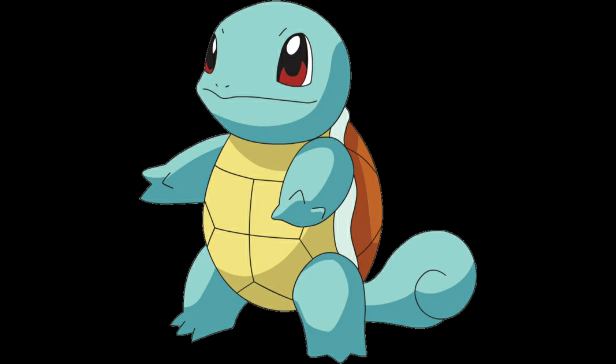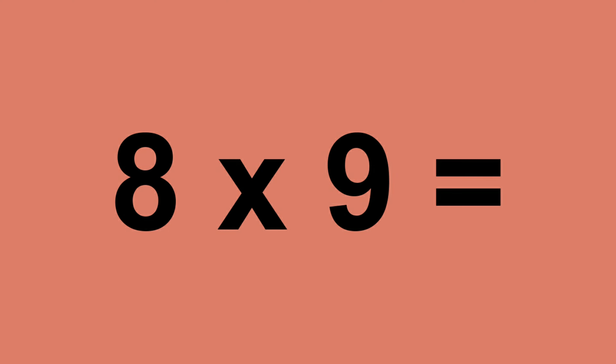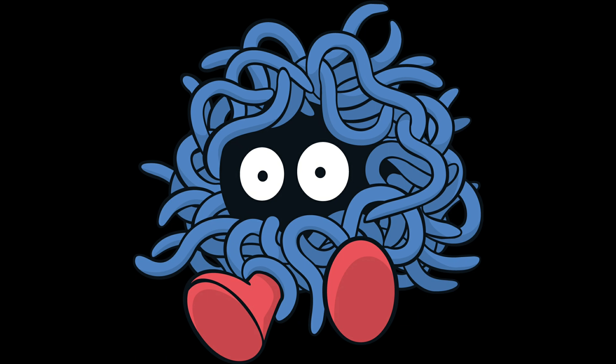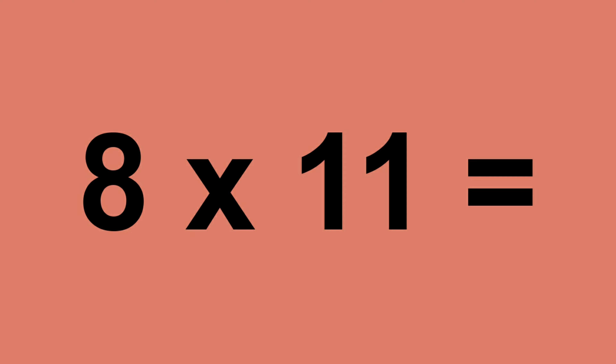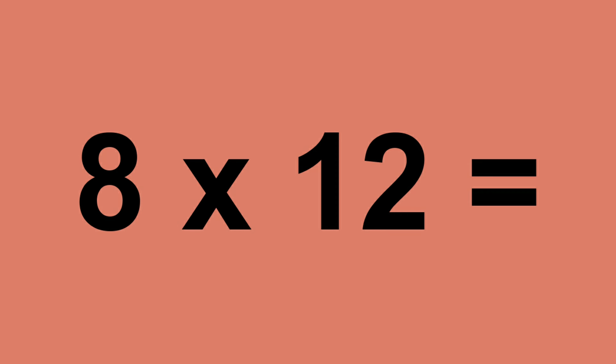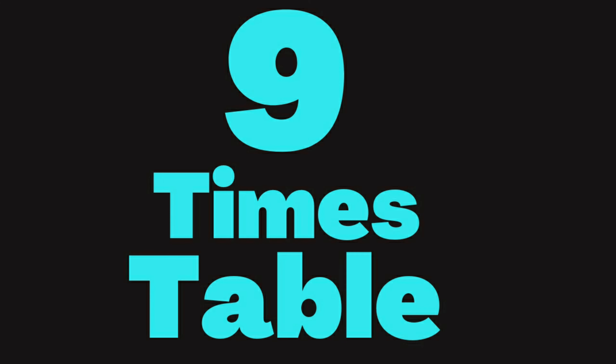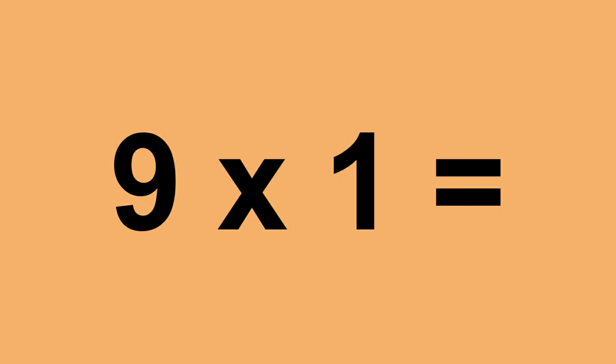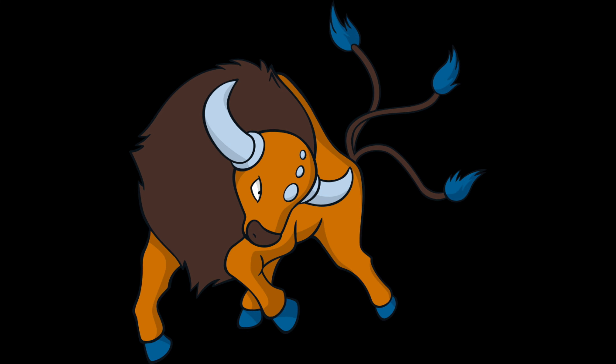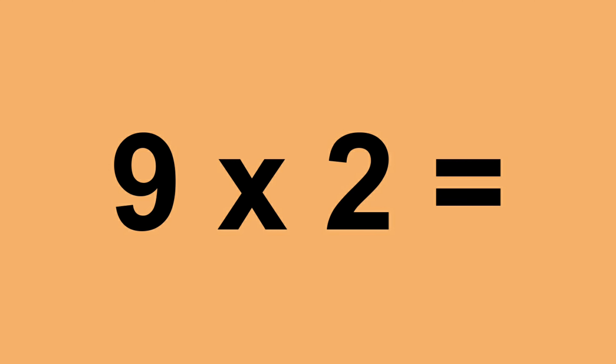Eight times seven equals fifty-six. Eight times eight equals sixty-four. Eight times nine equals seventy-two. Eight times ten equals eighty. Eight times eleven equals eighty-eight. Eight times twelve equals ninety-six. Nine times zero equals zero. Nine times one equals nine. Nine times two equals eighteen.